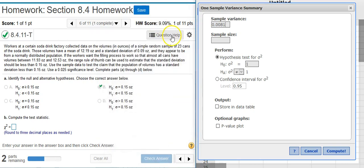My sample size is the 23 cans. My hypothesis test, I want to make sure that this matches what we have over here. But notice how what we have here in our Problem Statement, the answer we selected, is a hypothesis test on standard deviation. Here in StatCrunch, we're looking at variance.